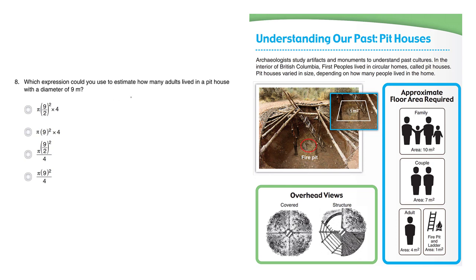Which expression could you use to estimate how many adults lived in a pithouse with a diameter of 9 meters? Now, referring back to this information about the pithouses, we see that it looks like a circle.